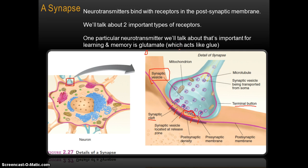The way to think about neurotransmitters is that they sort of fit into receptors just like a key would fit into a lock. Just like certain keys will only fit into certain locks, certain neurotransmitters will only fit into certain receptors. Each neurotransmitter — and there are a pretty large number of them; you've probably heard of some like dopamine, serotonin, norepinephrine — has to find its appropriate receptor site and will only be able to really bind with that appropriate receptor site.